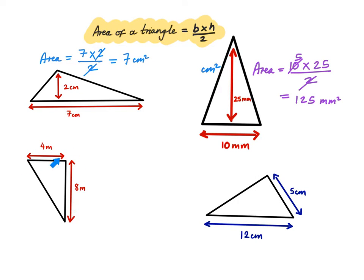Now let's do this one here. The base of this triangle is 4 metres, and the height of this triangle is 8 metres. So the area of this triangle is just equal to 4, which is the base, multiplied by the height, 8, divided by 2. 4 divided by 2 is 2. 2 times 8 is just 16 metres squared.